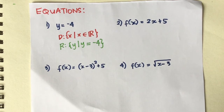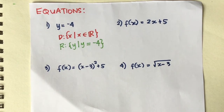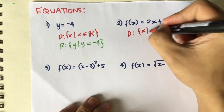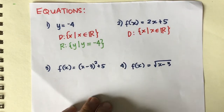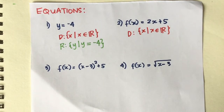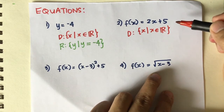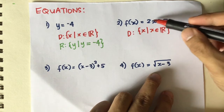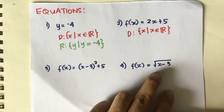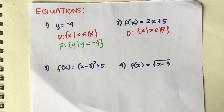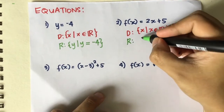For number two, ask yourself: what are the possible replacements for x? Are you allowed to use any values of x? The answer is yes, so the domain will be x such that x is an element of real numbers. For example, if x is 1: 2 times 1 plus 5 equals 7. If x is negative 3: 2 times negative 3 is negative 6, plus 5 is negative 1. Whatever value of x you input, you get a unique value for y, so the range is also all real numbers.